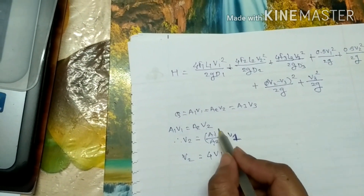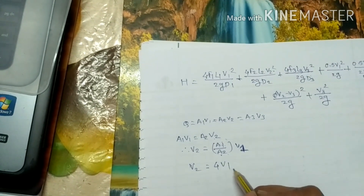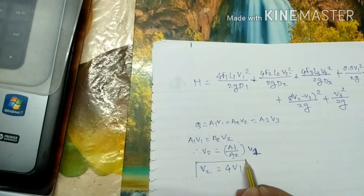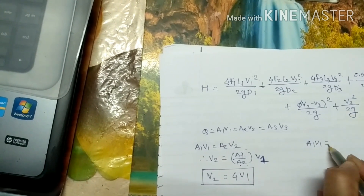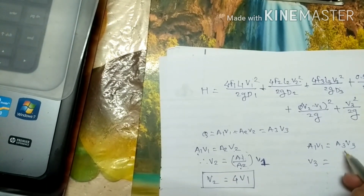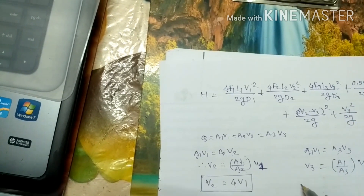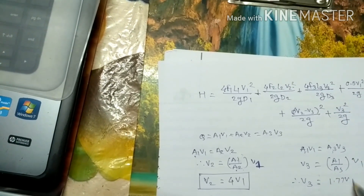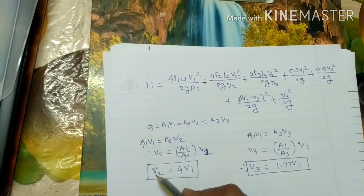Since π/4 cancels, you can substitute diameters directly. Similarly, find the second relation: a1·v1 = a3·v3, so v3 = (a1/a3)·v1. Calculating this gives v3 = 1.77·v1. So we now have two relations: v2 = 4·v1 and v3 = 1.77·v1.